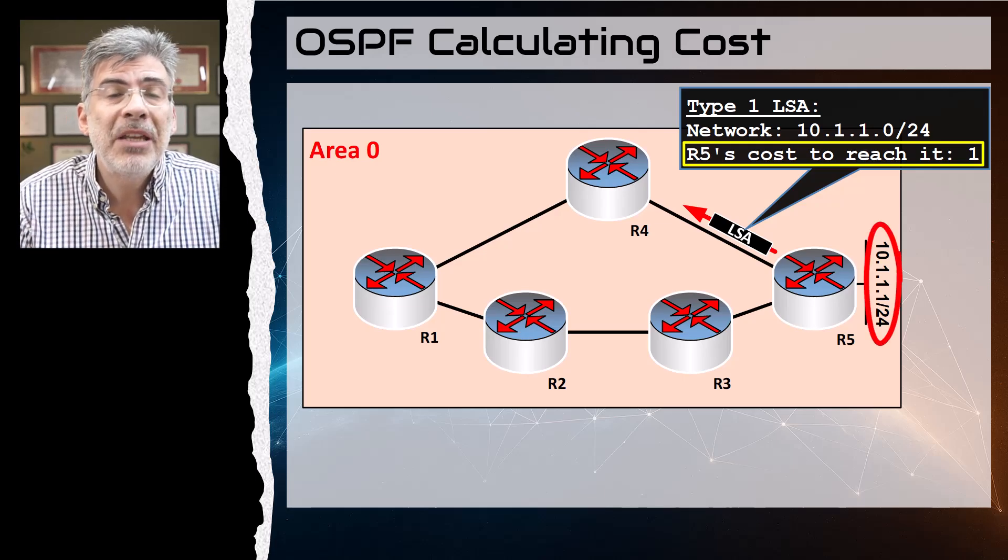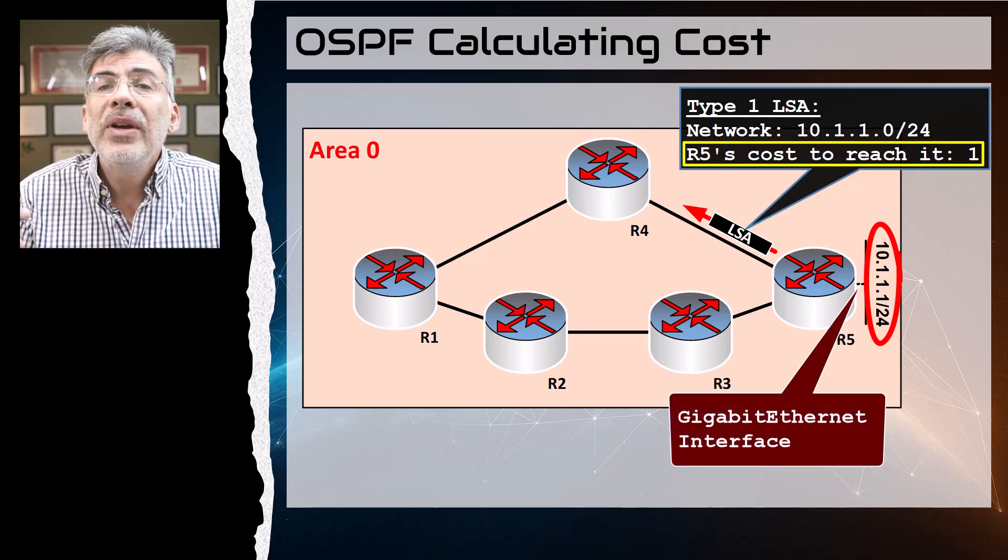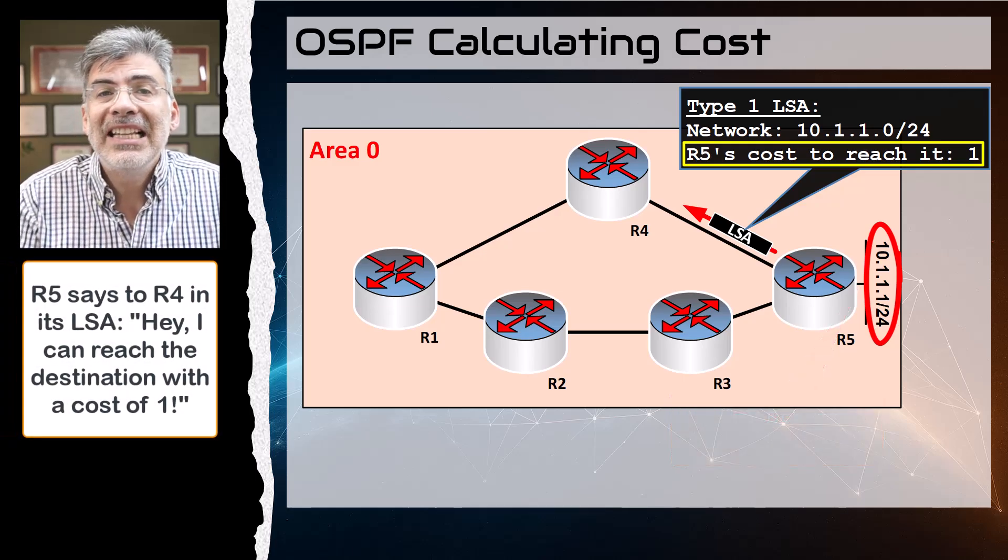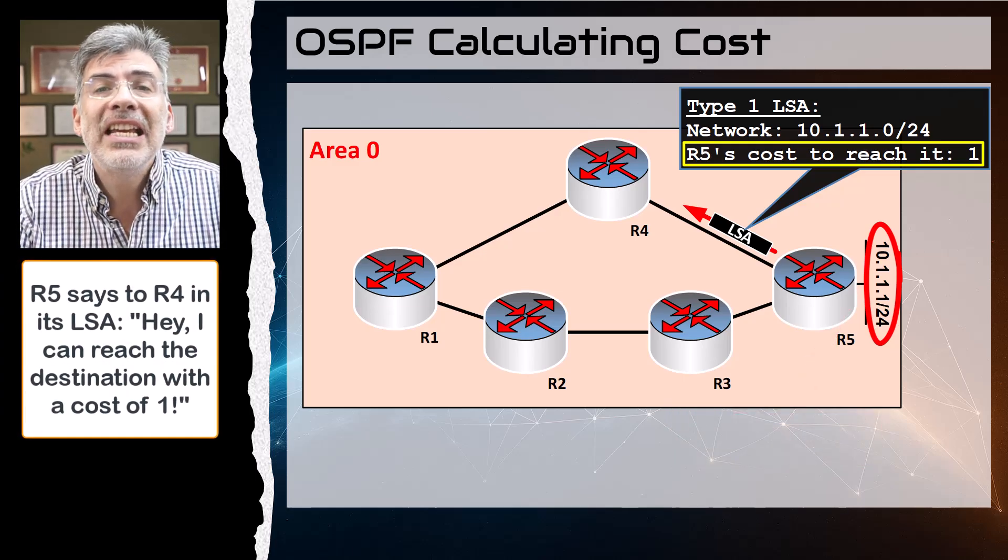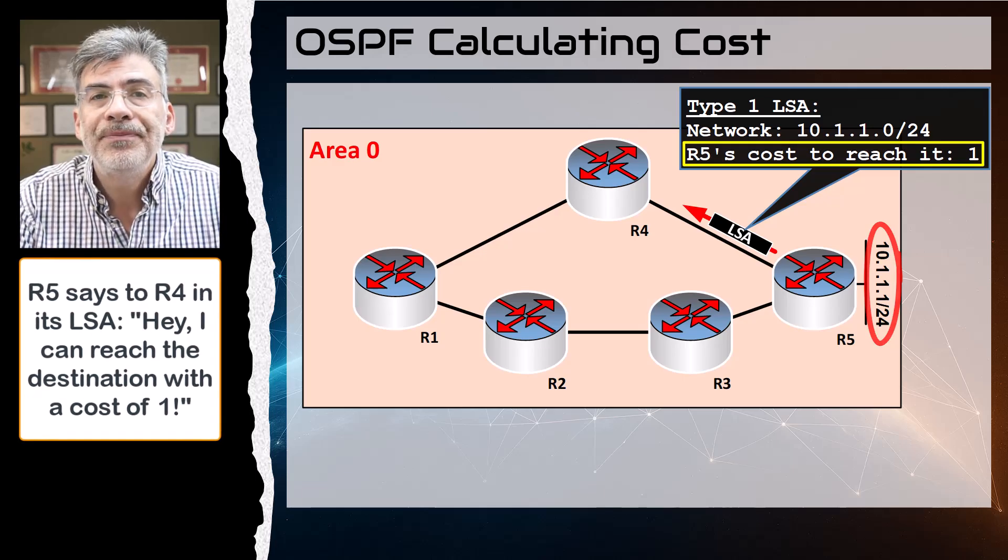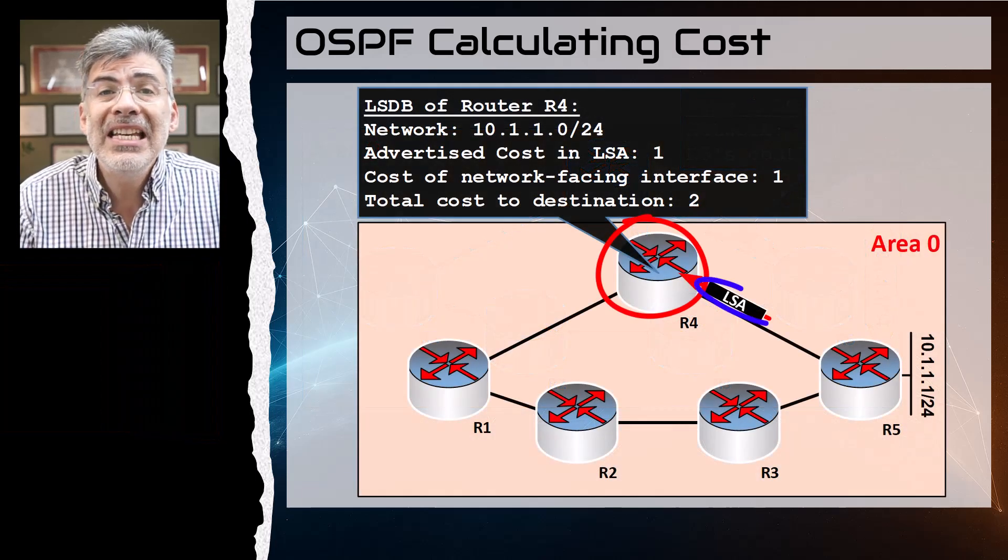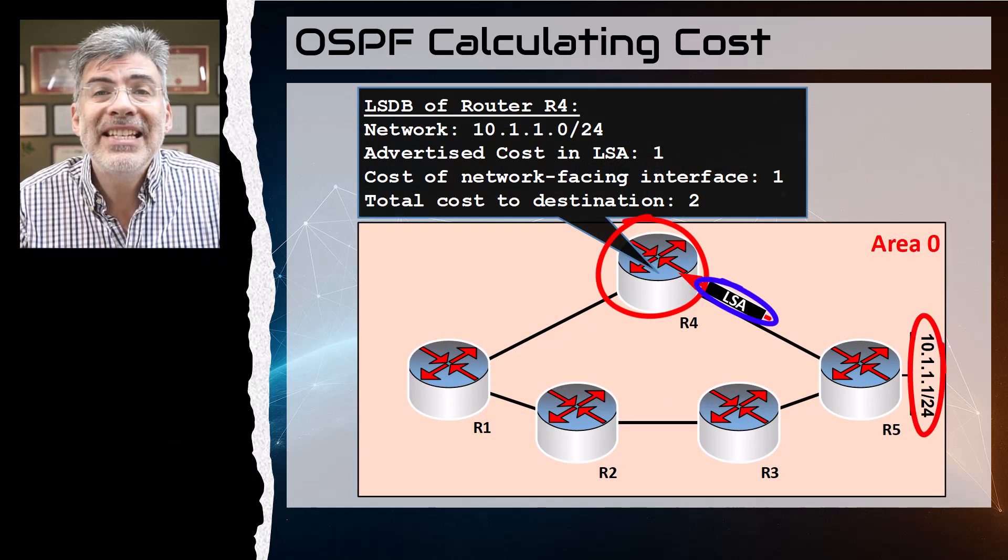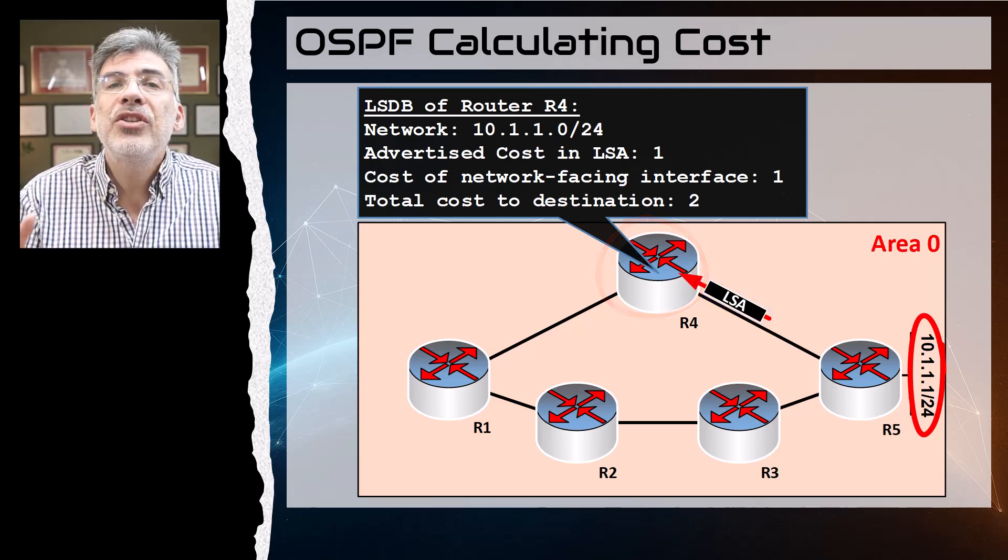We're assuming that's a gigabit Ethernet interface, so it says to R4 in its LSA, hey, I can reach the destination with a cost of one.